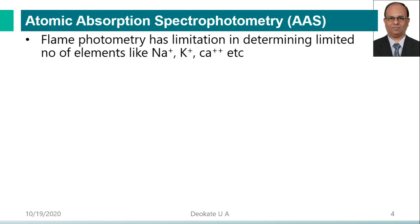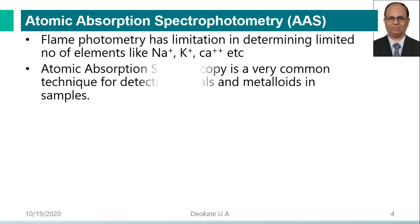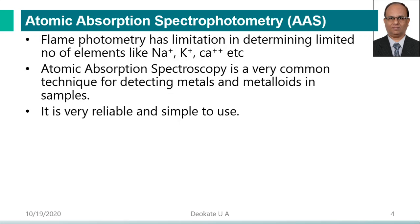What is atomic absorption spectrophotometry? In flame photometry, there are limitations in determining a limited number of elements like sodium, potassium, calcium, because we are using coal gas or cooking gas whose temperature is not more than 1700 degrees centigrade. Atomic absorption spectroscopy is a very common technique for detecting metals and metalloids in samples. It is very reliable and simple to use, even simpler than a flame photometer.